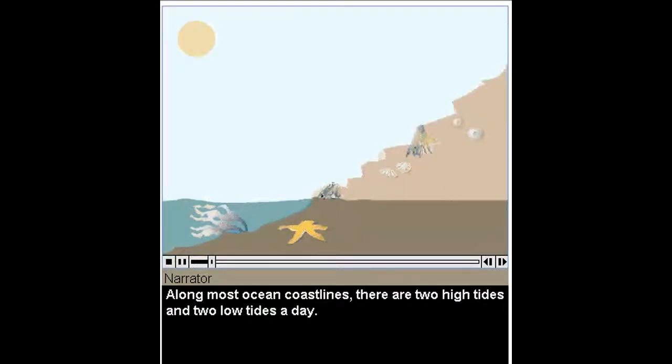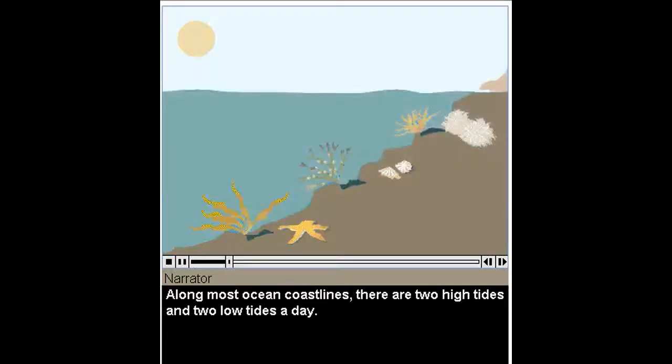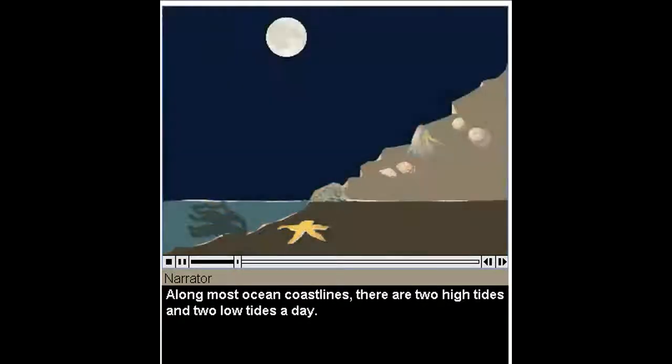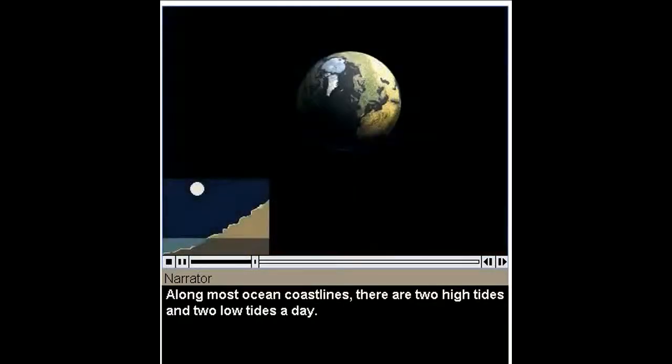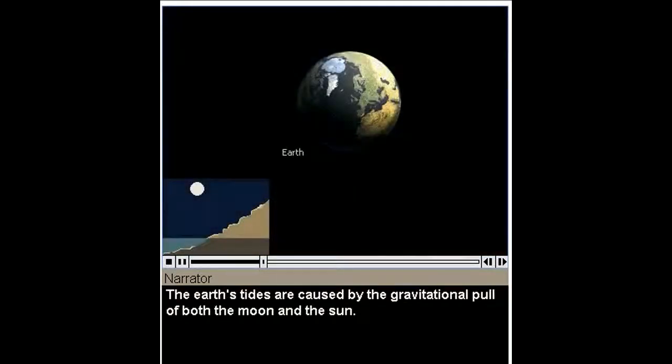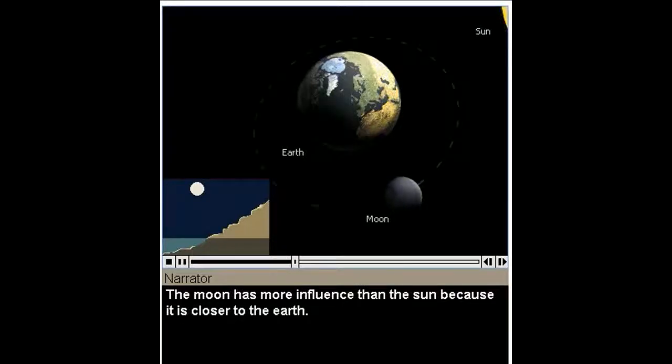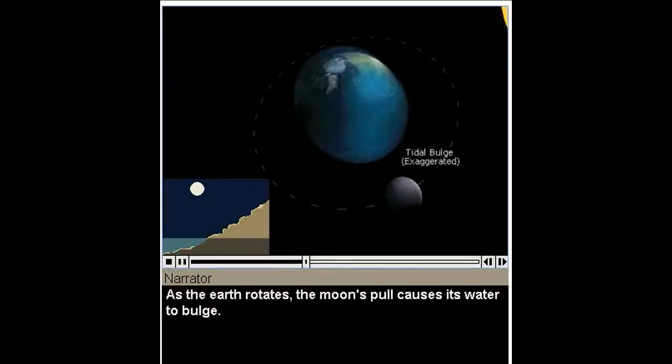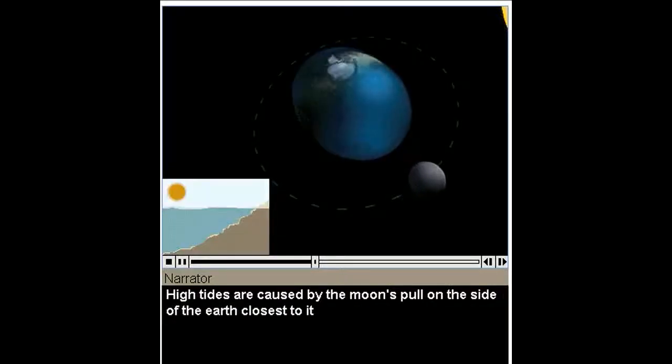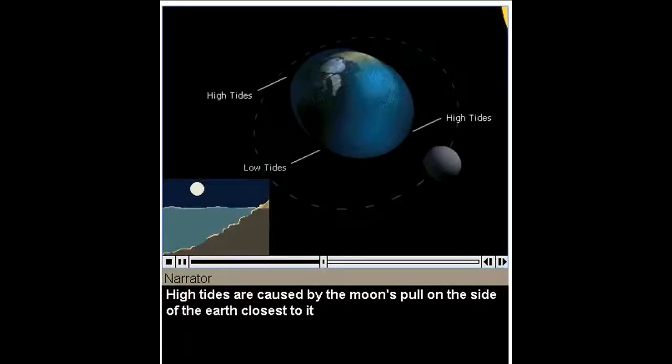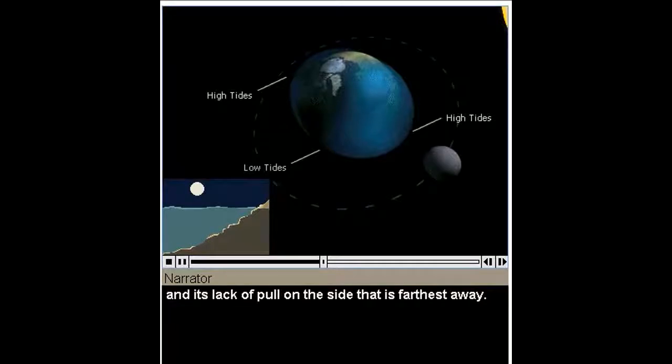Along most ocean coastlines, there are two high tides and two low tides a day. The Earth's tides are caused by the gravitational pull of both the Moon and the Sun. The Moon has more influence than the Sun because it is closer to the Earth. As the Earth rotates, the Moon's pull causes its water to bulge. High tides are caused by the Moon's pull on the side of the Earth closest to it, and its lack of pull on the side that is farthest away. Low tides are the areas in between.